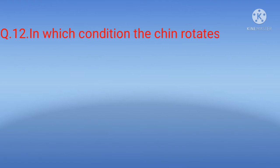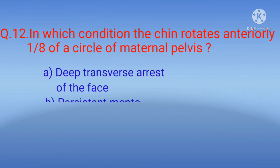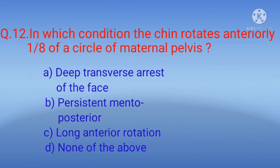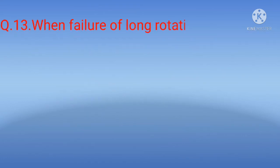Question 12: In which condition does the chin rotate anteriorly one-eighth of a circle of the maternal pelvis? Options: A) deep transverse arrest of the face, B) persistent mentoposterior, C) long anterior rotation, D) none of the above. The correct option is A) deep transverse arrest of the face.